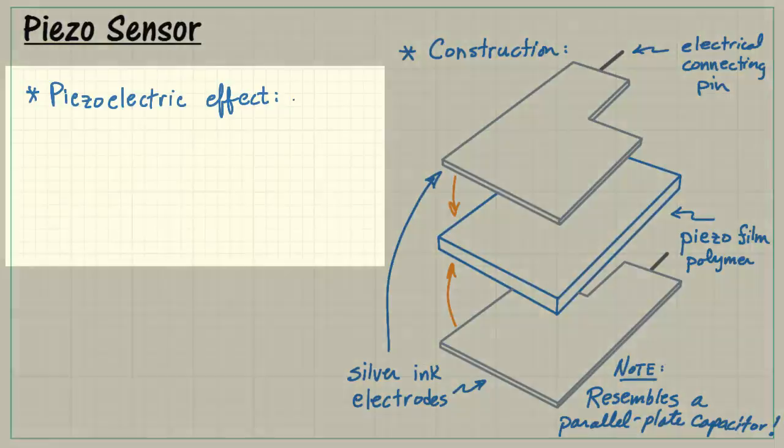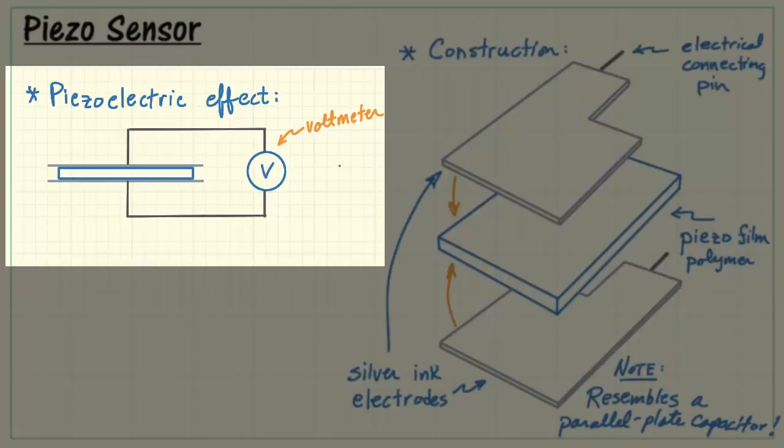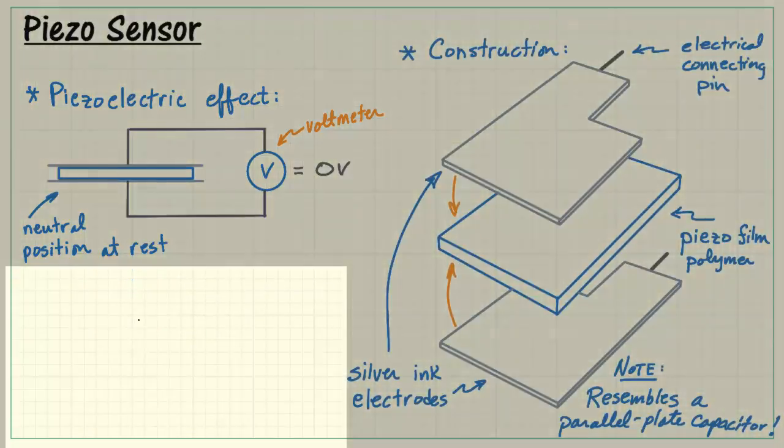Now let's look at the piezoelectric effect itself. Taking that structure that looks a lot like a parallel plate capacitor, we connect a voltmeter to either electrode, and then in the neutral position at rest, there's nothing special observed. The voltmeter simply observes zero volts.